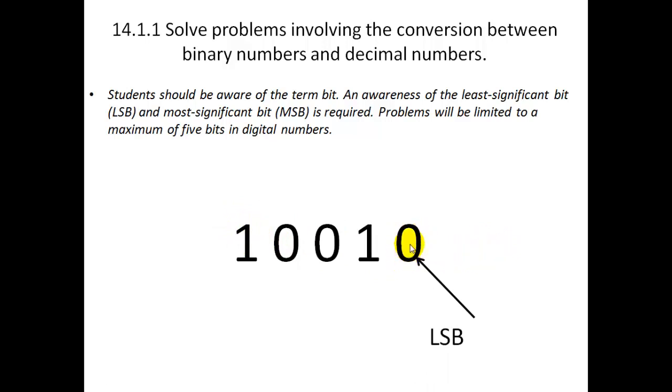This is the least significant bit, the one on the right, because it only contains the units, which is the smallest quantity. The most significant bit is the one on the far left, because that tells you how many lots of 16 you have. So this is 1 sixteen plus 1 two, which gives a number of 18.